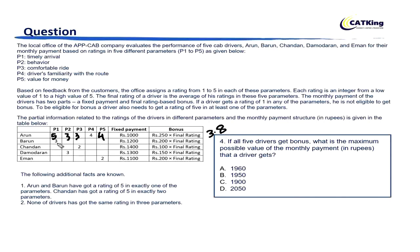For Barun, he has 3 already and gets one 5. To maximize, assign 4, 4, and 3. Total = 3+5+4+4+3 = 19. Final rating = 3.8. For Chandan, he can get two 5s. In the remaining 2 positions, assign 4 and 4. Total = 5+5+4+4+? = 20. Overall rating = 20/5 = 4.